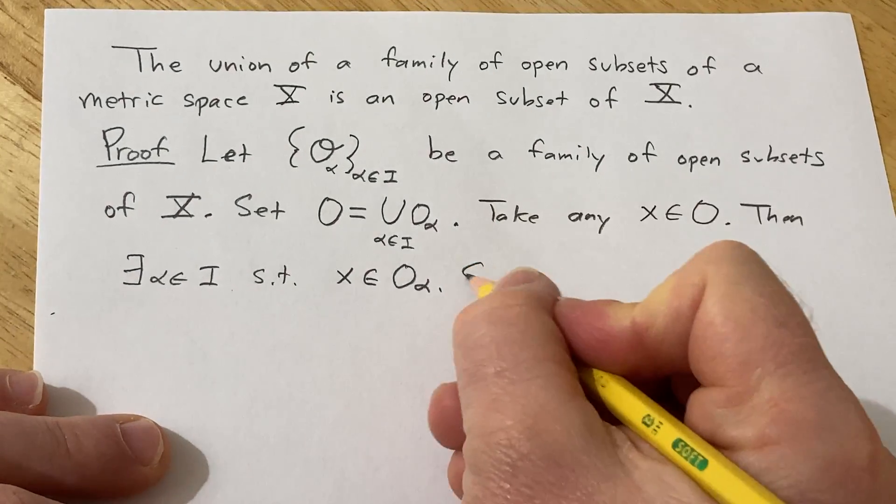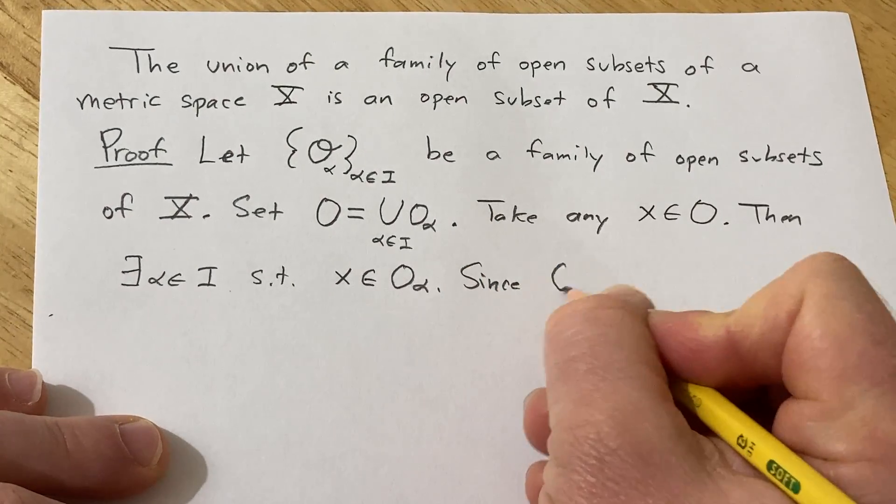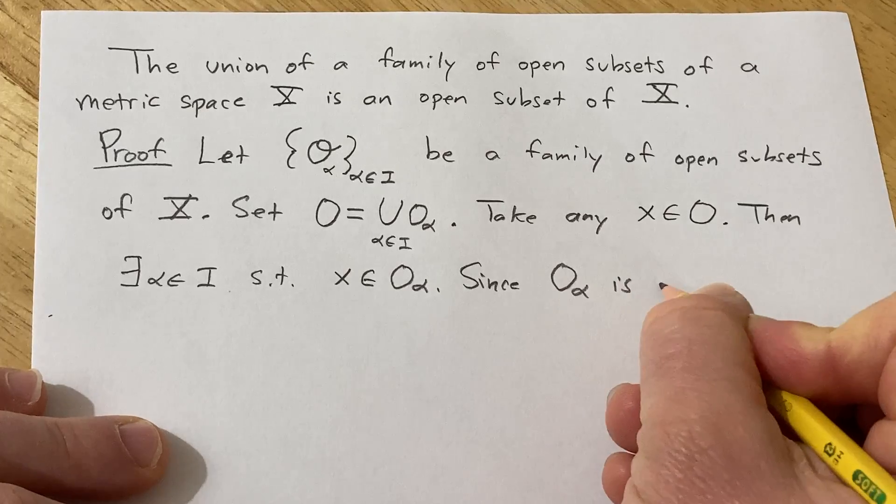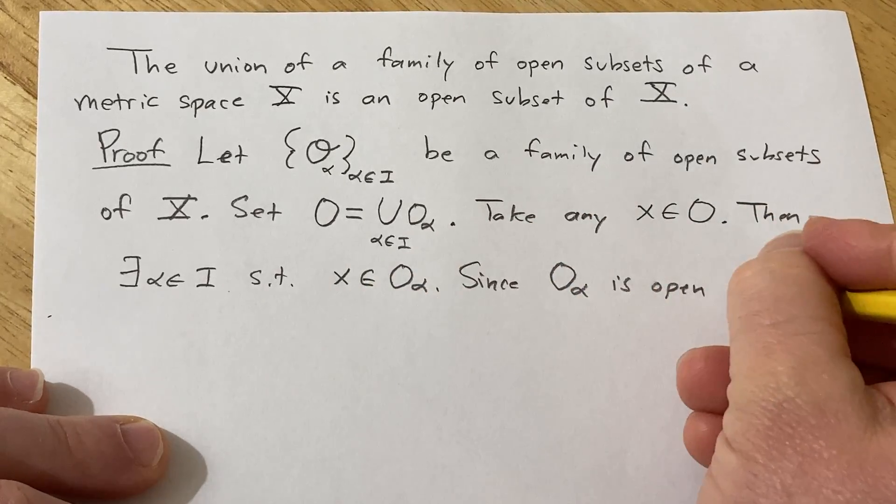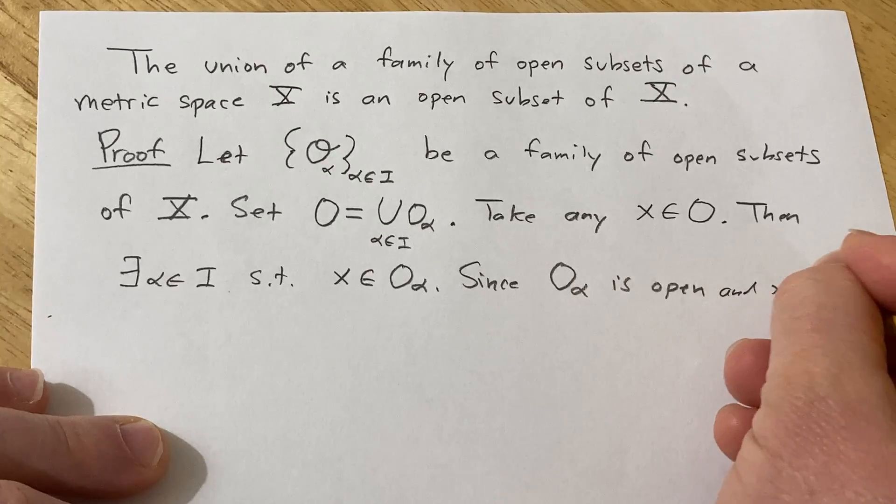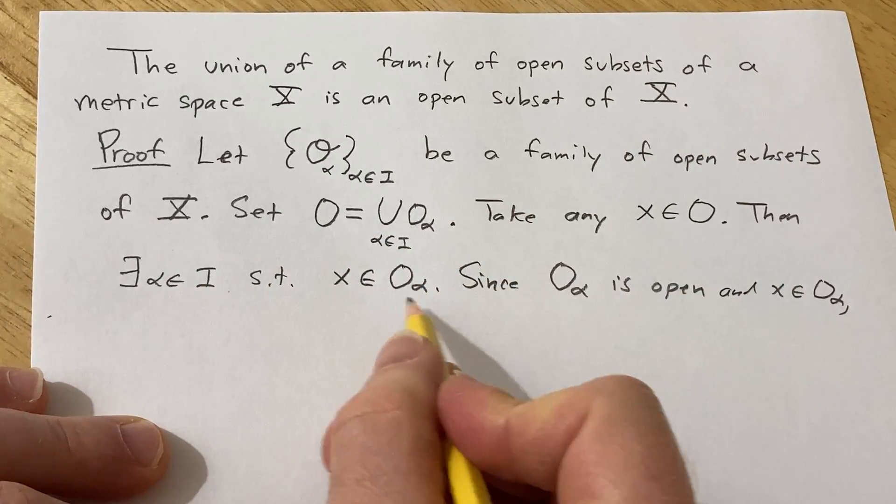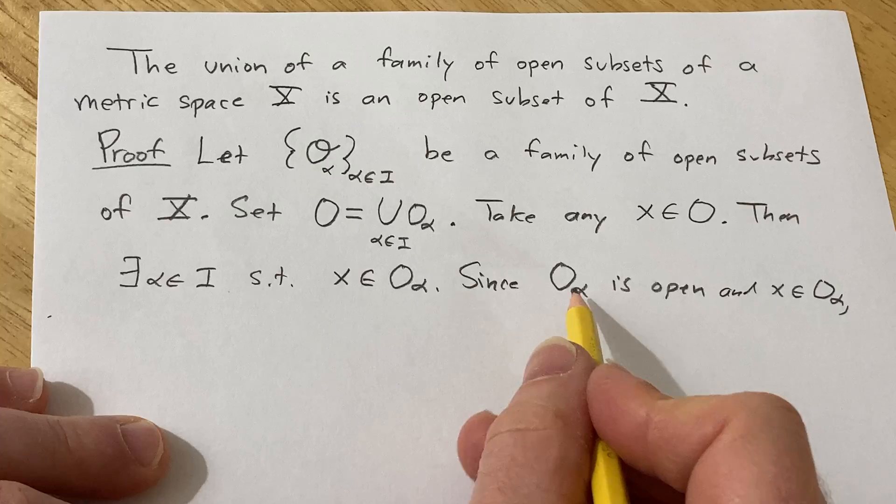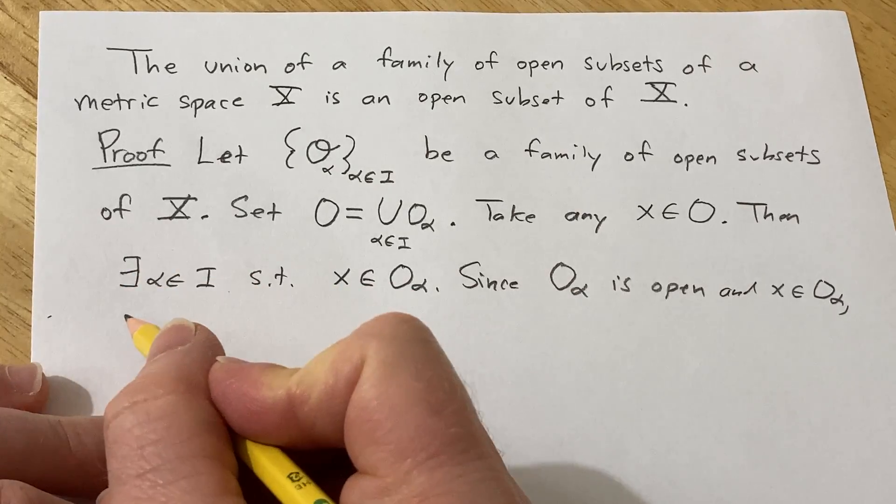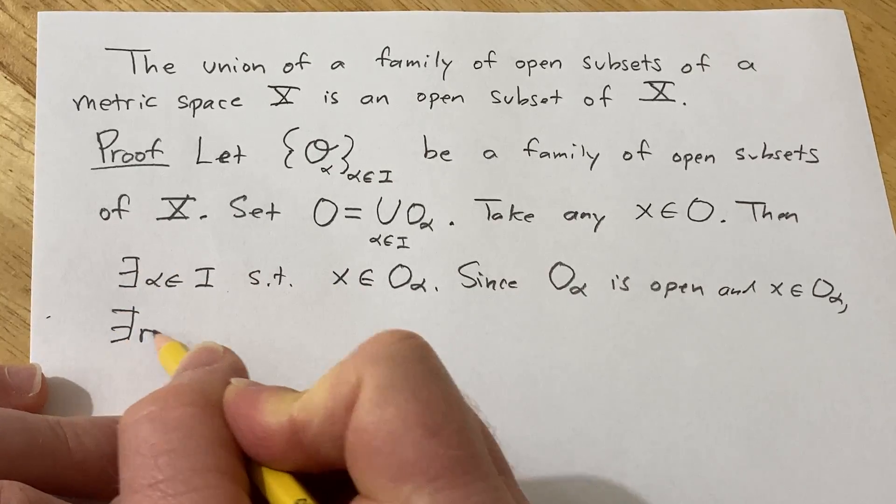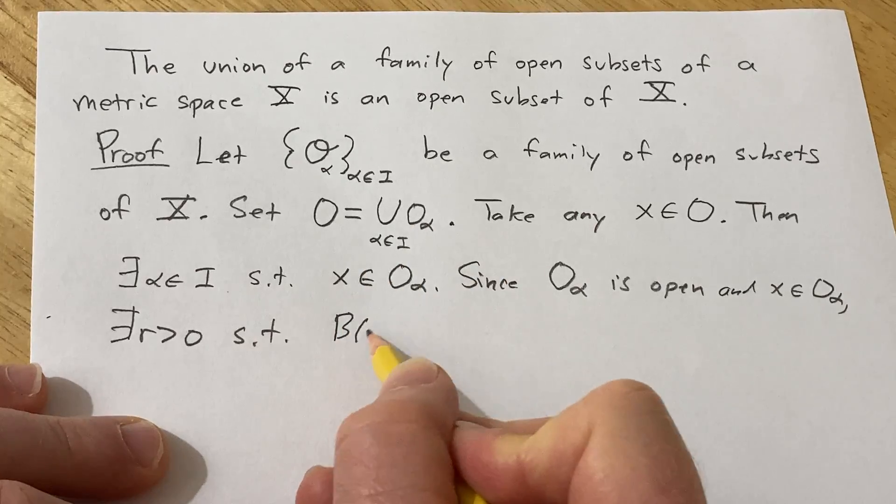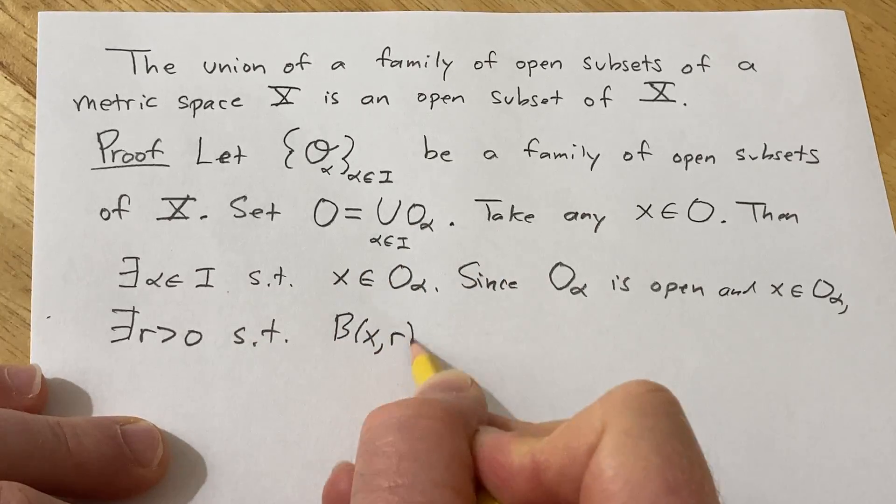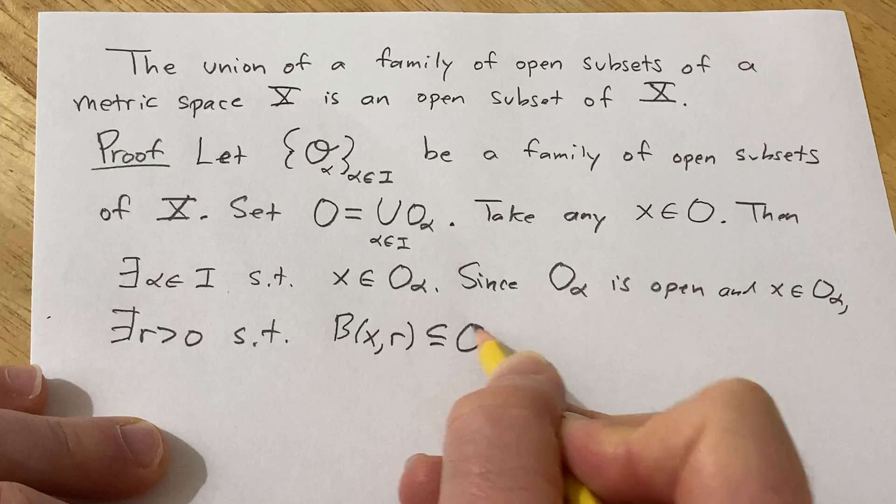But this is open. So since O sub alpha is open, and x is in the set, there's some open ball centered at x of positive radius contained entirely in the set. So there exists some R greater than zero, such that you have some open ball centered at x of radius R that's contained entirely in O sub alpha.